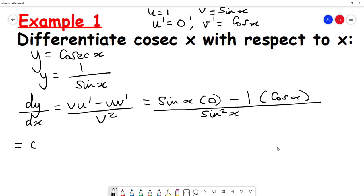That gives me 0 minus cosine of x over sine squared x. I can write that as minus cosine of x over sine x.